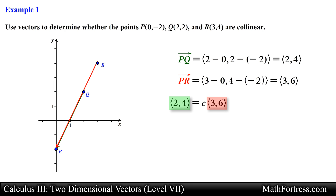Looking at the vectors we see by inspection that they are indeed parallel to one another, since vector PQ is two thirds of vector PR. Hence both vectors are parallel and we used a common point to form the vectors, in this case point P, which means that the points are indeed collinear.